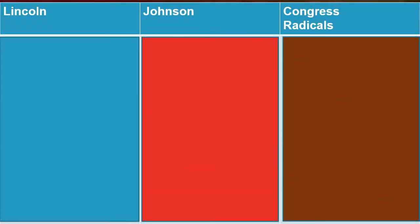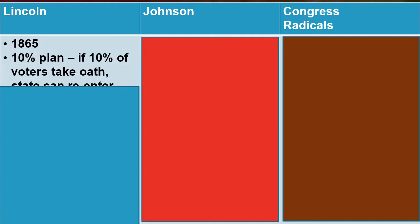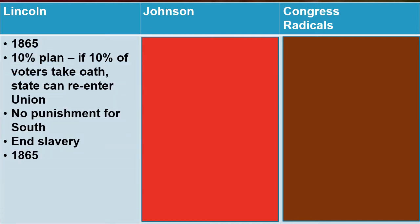Reconstruction began with Presidents Lincoln and Johnson. Even before the war ended, Lincoln had begun to see what would be necessary to put the nation back together. Historians call his plan the 10% plan. By 1865, the year he died, the idea was that if 10% of the voters of a particular state take an oath to the union, they can re-enter the union.